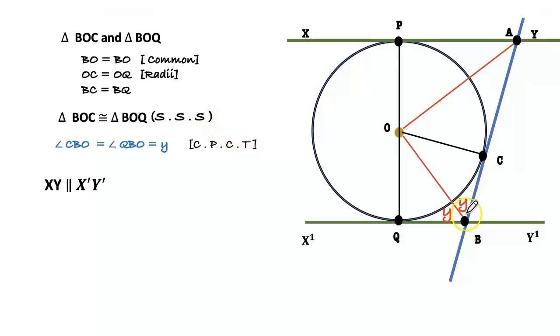XY and X'Y' are parallel tangents. AB is a tangent intersected at C. Here AB is transversal. Angle PAB plus angle QBA equals 180 degrees. Lines are parallel then co-interior angles are supplementary.